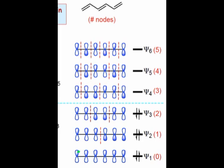In the lowest level, we see that all the lobes have the same phase, leading to five bonding interactions. In the level above, we can see four bonding interactions symmetrically disposed about the center of the molecule and a single antibonding interaction in the center, for a net of three bonding interactions.